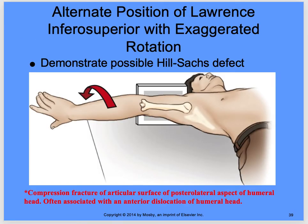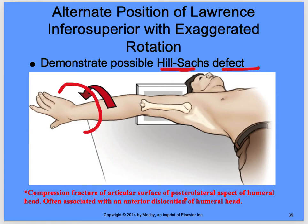The alternate position of the Lawrence inferior superior with exaggerated rotation demonstrates a possible Hill-Sachs defect — a compression fracture of the articular surface of the posterior lateral aspect of the humeral head, often associated with an anterior dislocation of the humeral head. This is important to know — it will help you on an exam question. With that exaggerated rotation, you're seeing the head of that humerus better, which is what you're looking for because the fracture may occur at the posterior lateral aspect of the humeral head.